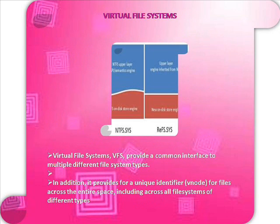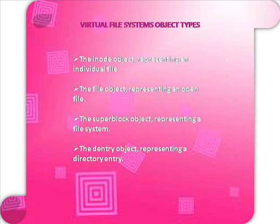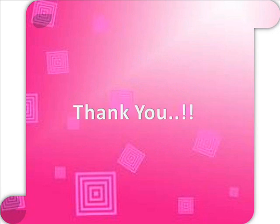Virtual file system. VFS provides a common interface to multiple different file system types. In addition, it provides a unique identifier for files across the entire space, including across all file systems of different types. Virtual file system object types: the inode object representing an individual file, the file object representing an open file, the super block object representing a file system, and a dentry object representing the directory entry. Thank you.